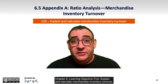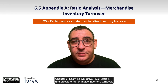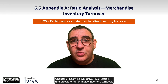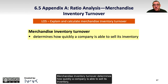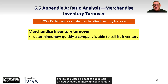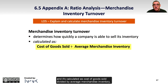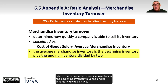Chapter 6 Learning Objective 5: Explain and calculate merchandise inventory turnover. Merchandise inventory turnover determines how quickly a company is able to sell its inventory, and it's calculated as cost of goods sold divided by average merchandise inventory, where average merchandise inventory is the beginning inventory plus the ending inventory divided by two.